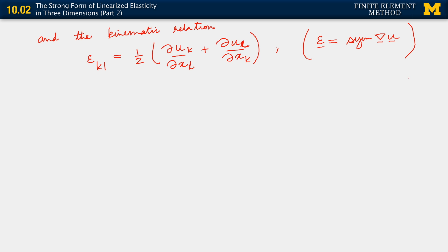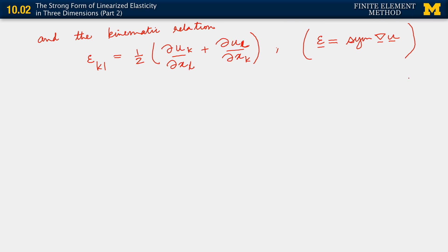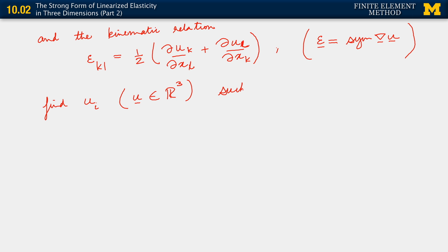So we have these components of our problem. We're given data in terms of vectors u_g, t_bar, and f. We're given a constitutive relation relating the stress to the strain through the elasticity tensor. And we're given this kinematic relation. Given all this, what we are faced with is finding u_i — which is a vector, a component of a vector, so u belongs to R3. So u_i is our solution field, which in elasticity is the displacement field.